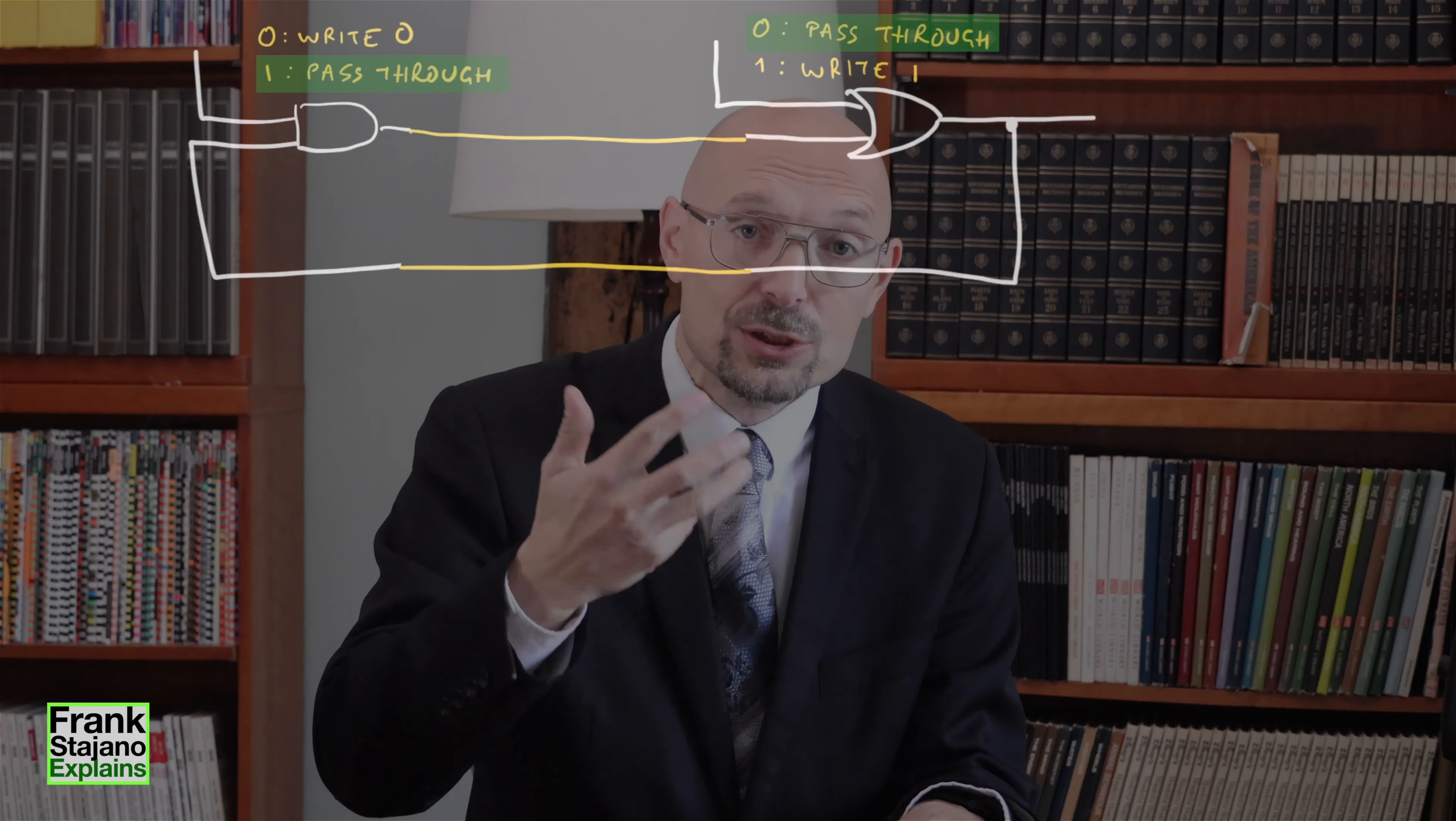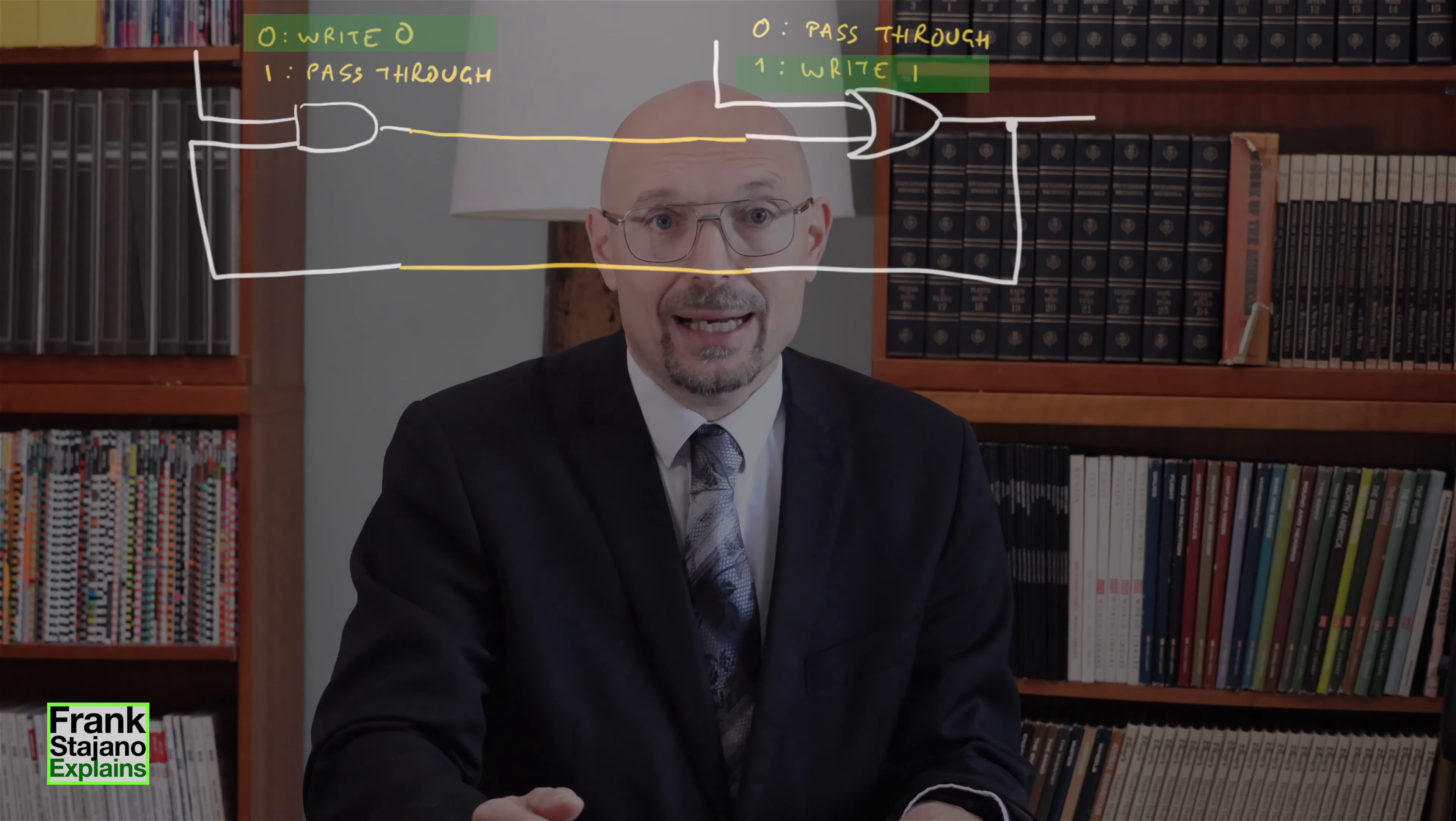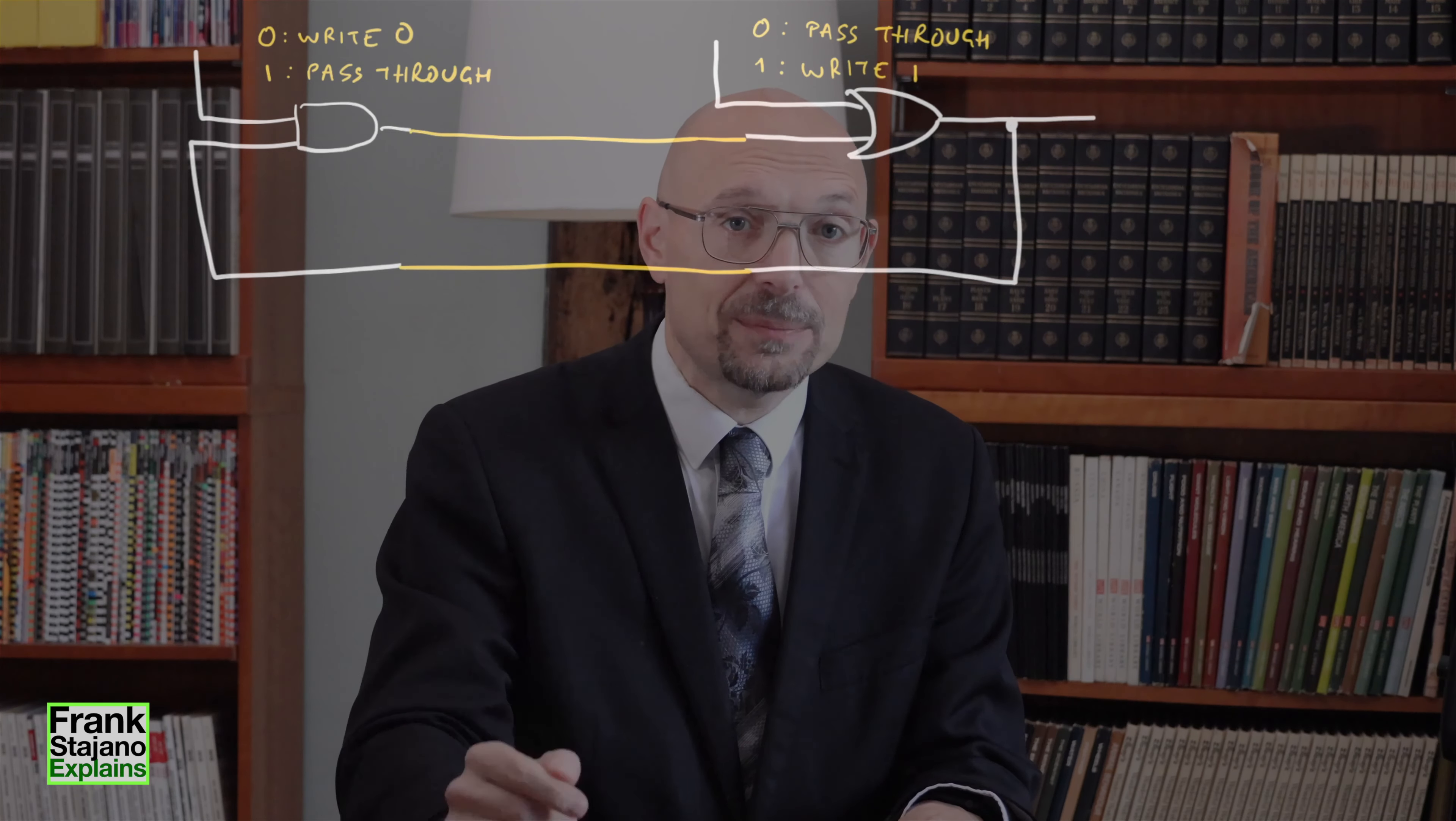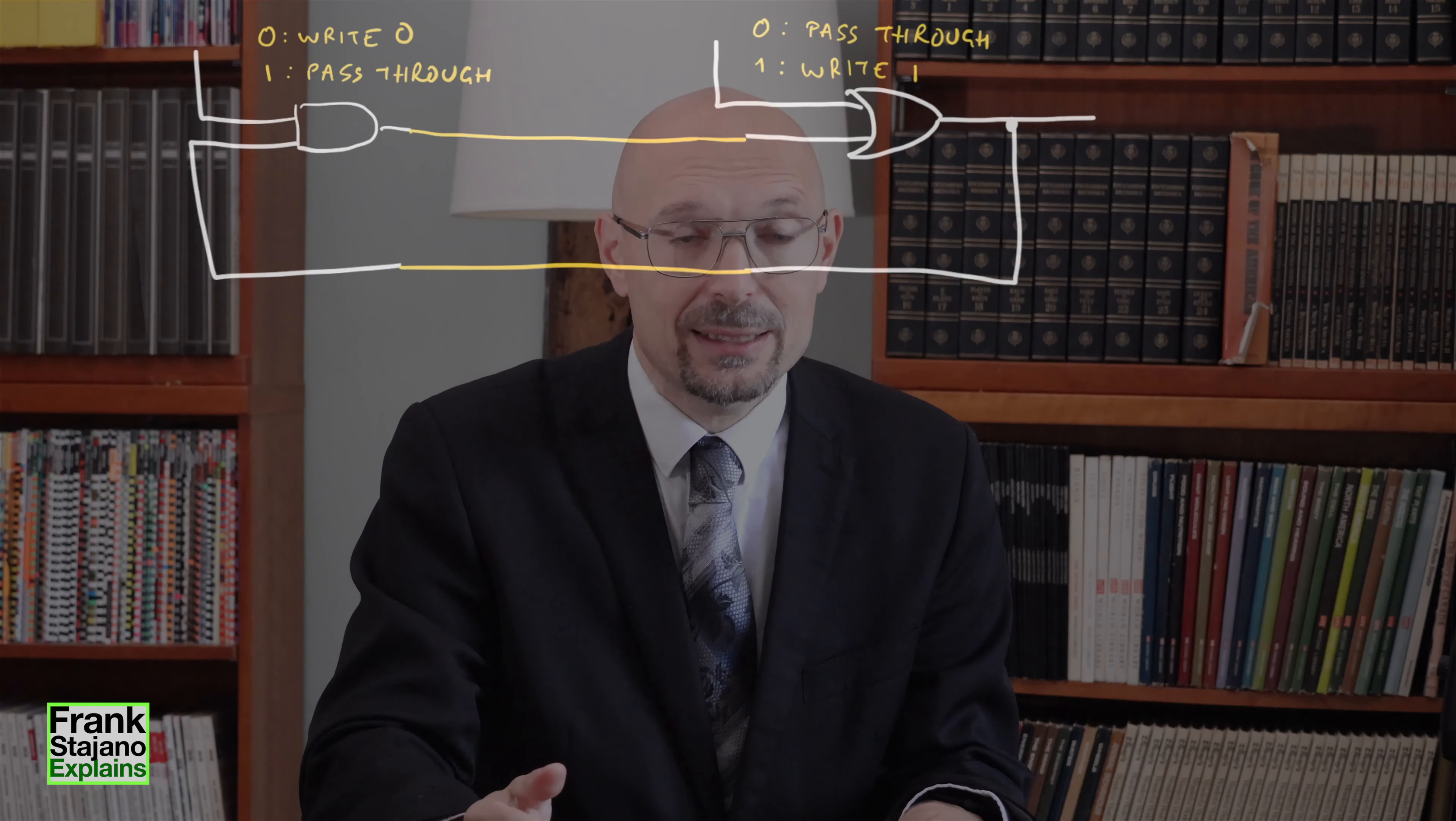So these control inputs have a pass-through position. Each of them has a pass-through position where it does nothing and lets the previous value circulate, and that setting is the 0 for the OR control input and 1 for the AND control input. But then by setting one of those inputs to the opposite value, which we could call the active value instead of the pass-through value, then I can write my chosen bit into the loop. And the trick is that if I want to write a 1, I must use the control input on the OR gate and bring it high, whereas if I want to write a 0, I must use the control input on the AND gate and bring it low. And I must activate a different input depending on the value that I want to write. There isn't a single control input where I can write a 0 or 1 value.